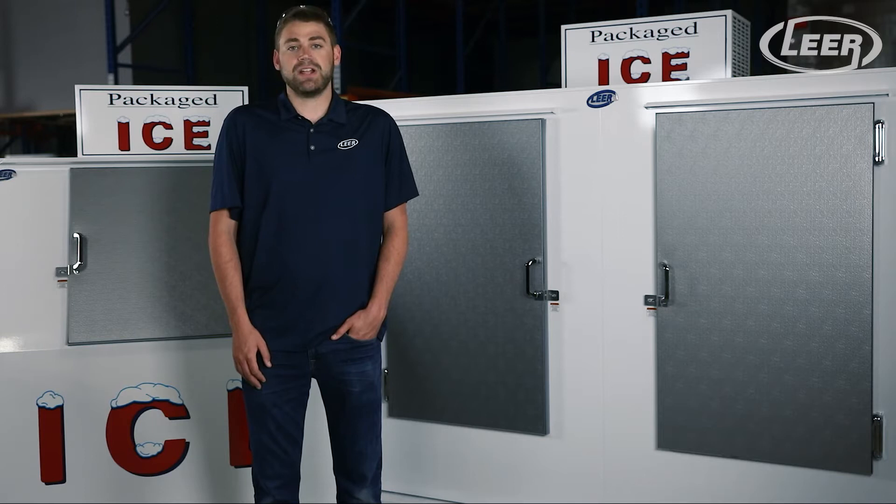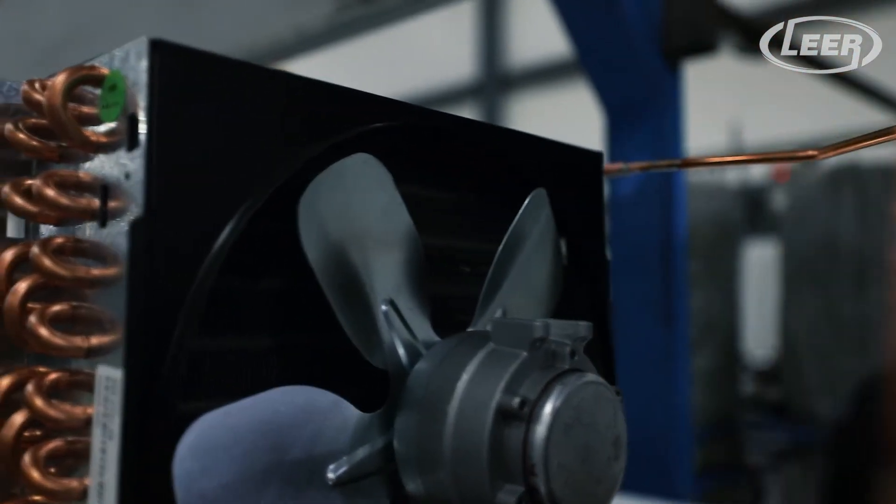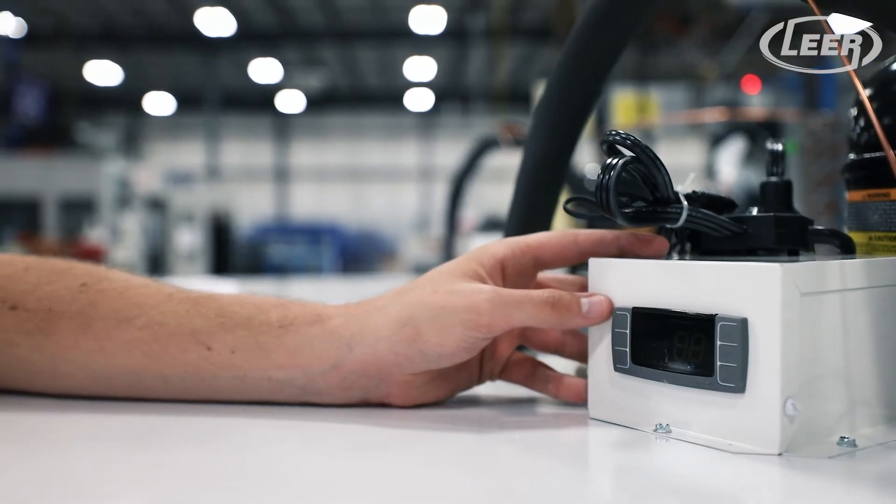The compressors range from a third to three quarters of a horsepower depending on the size of the unit. Due to EPA requirements, Lear actively pursues alternate and compliant refrigeration techniques. Our website will have the most up-to-date information.